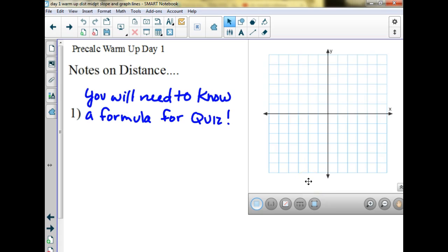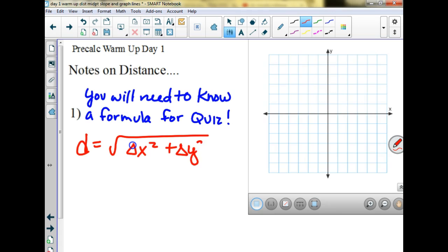On the quiz, it asks at the top for you to write the formula for distance, midpoint, and slope. I'm not going to be super picky about how that looks. For example, if I had to know distance formula, I would say do this: change in x squared plus change in y squared and then square root.